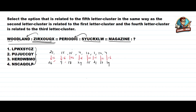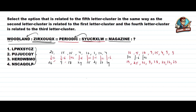Verifying with 'periodic': P=16, E=5, R=18, I=9, O=15, D=4, I=9, C=3. The coded values are 19, 25, 21, 3, 18, 24, 12, 23 — confirming the +3, -6 alternating pattern. So for 'magazine', applying the same rule.